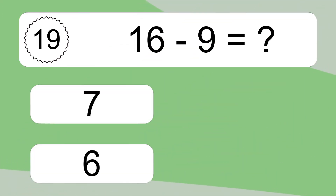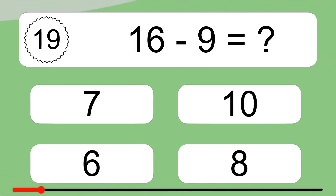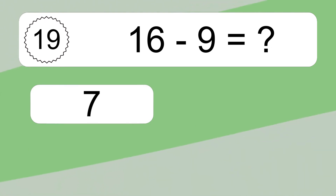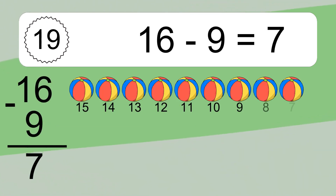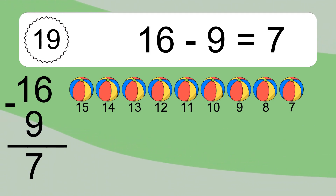16 minus 9 equals what? 16 minus 9 equals 7. Let's count it: 15, 14, 13, 12, 11, 10, 9, 8, 7.